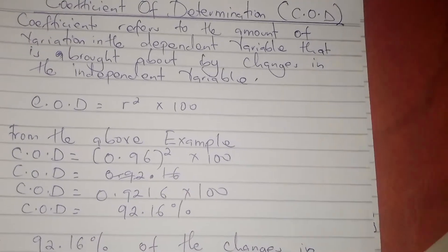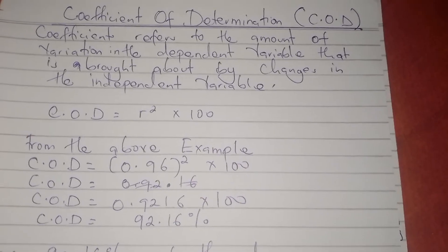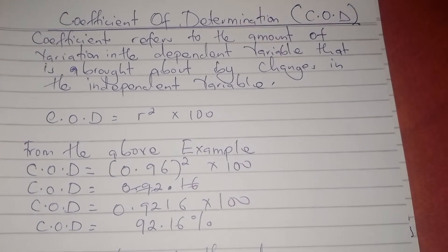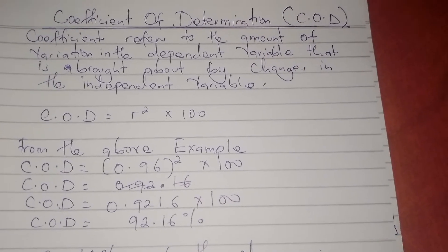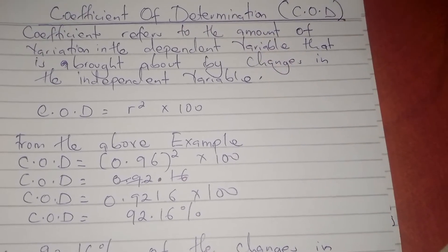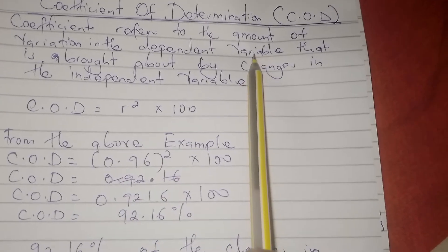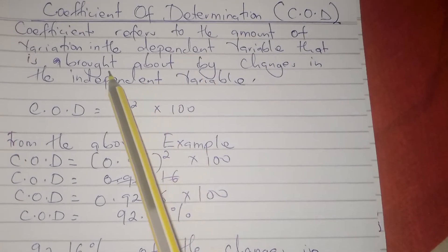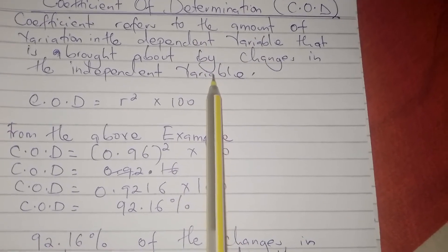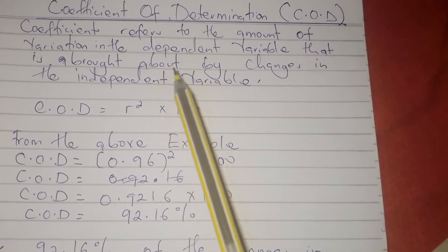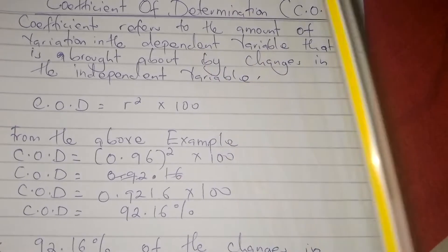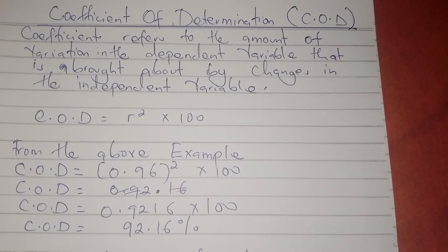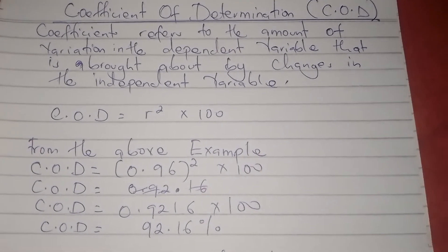A good example of dependent and independent variables is class attendance and performance. Performance depends on class attendance. The coefficient of determination looks at the amount of variation in the dependent variable — here, performance — that is brought about by changes in the independent variable, which is attendance. If your attendance declines, there is a higher chance that your performance will also decline.